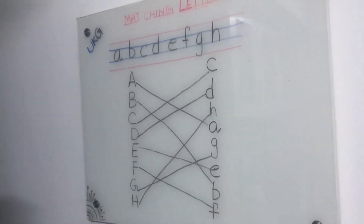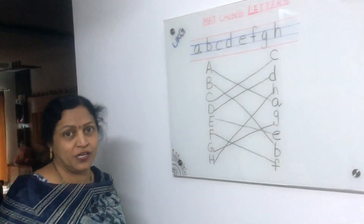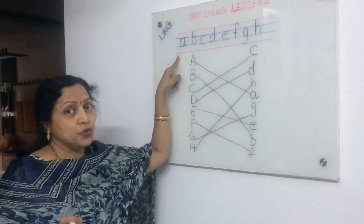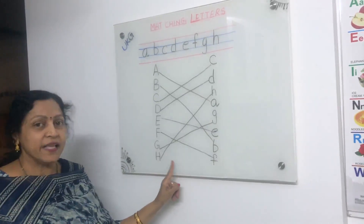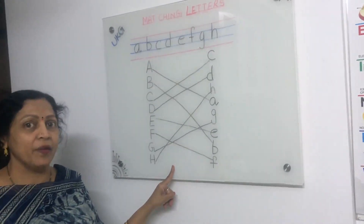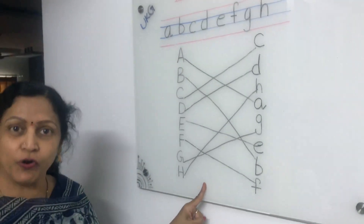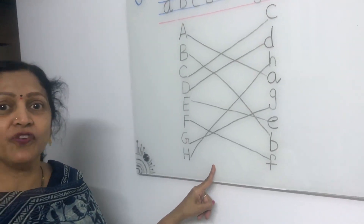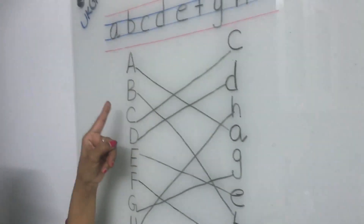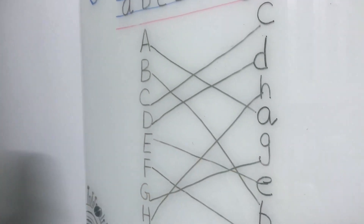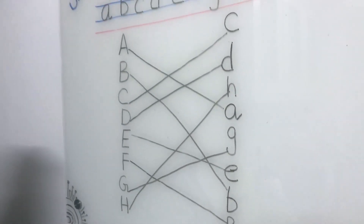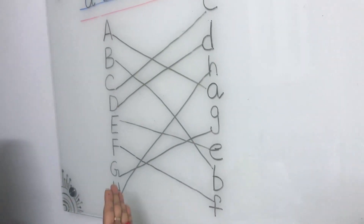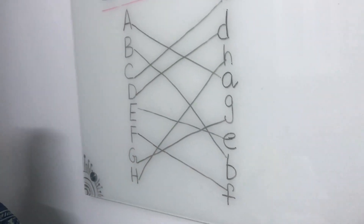Okay. This is one small assignment for you children. You have to write A to H two times, and this activity also one time. You have to write in your notebook with the help of your parents. Ask your parents to write the capital letters and small letters, and after that you match the capital and small.